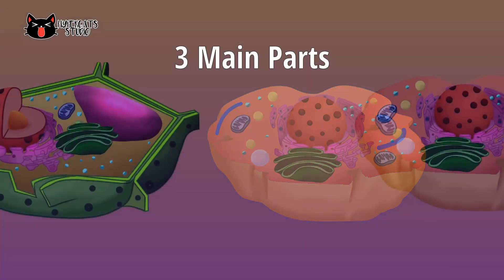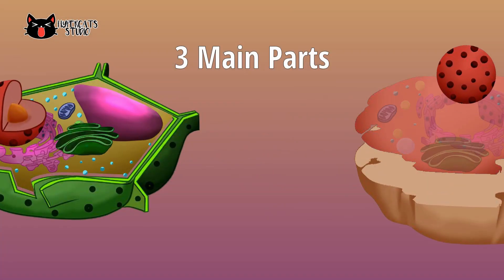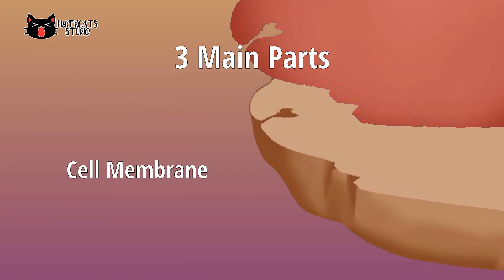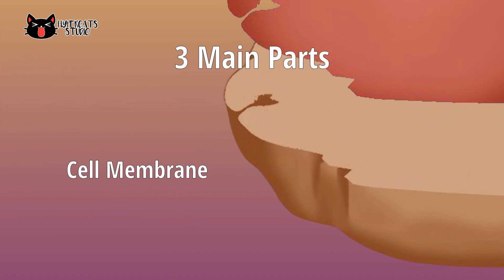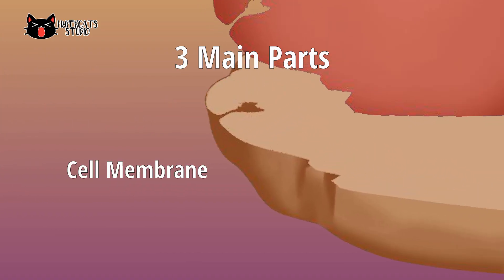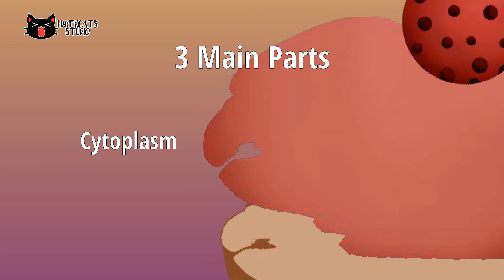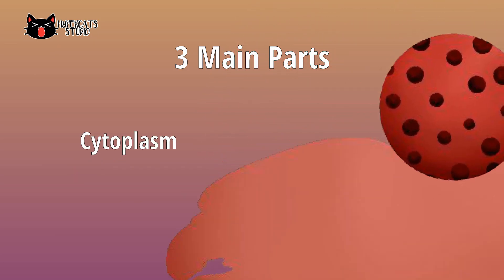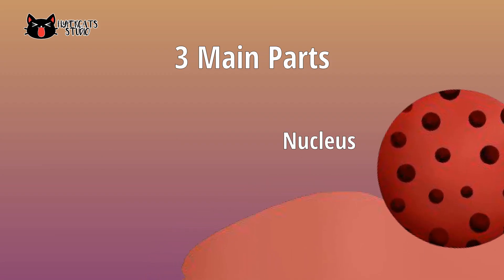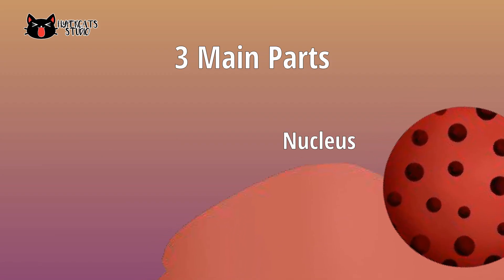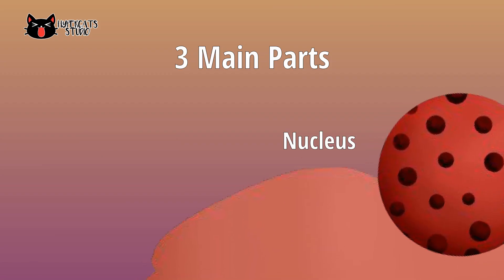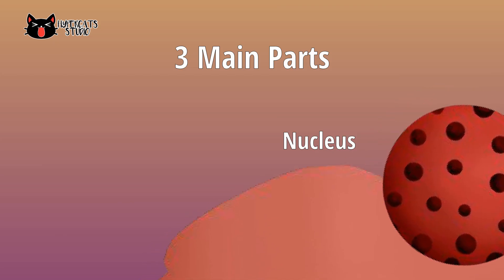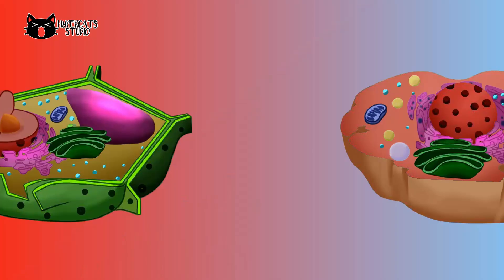A eukaryotic cell has three parts: the nucleus, cytoplasm, and cell membrane or plasma membrane. The cell membrane is a thin membrane that forms the outer boundary of the cell. The cytoplasm contains protoplasm where other organelles are found. The nucleus is the control center of the cell — it houses the DNA, the hereditary material, as well as various proteins, nucleolus, and is covered by a nuclear membrane.